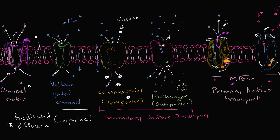Potassium builds up on the inside of the cell because of the sodium-potassium pump. Down here is the inside, and this is the outside of the cell. These channels allow the potassium to flow down its concentration gradient. It's going to be put in check because of its charge and it's more positive outside, but we talk about that in other videos. It's just a simple tunnel.